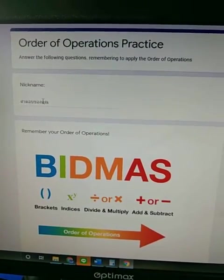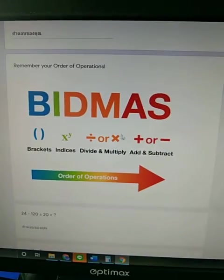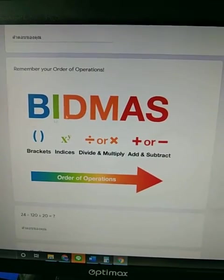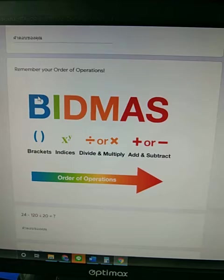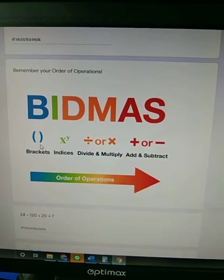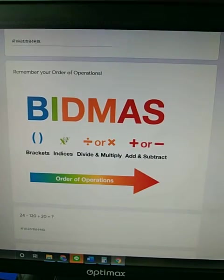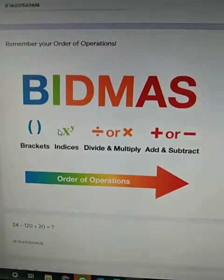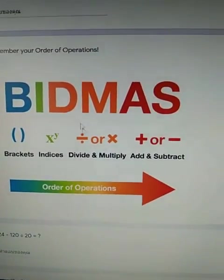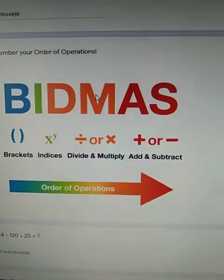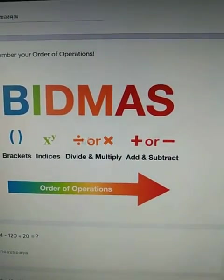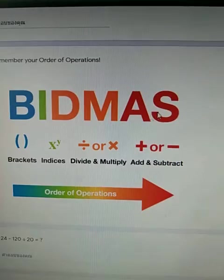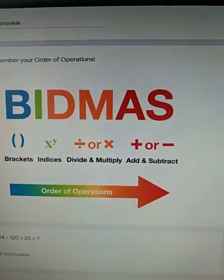So remember to put your nickname first thing and I've put this here just to remind you of your order of operations. So we do our brackets as the first thing, then we do indices. We don't have to worry about that just yet. That's not going to be in any questions today. Then we divide or we multiply and if we've finished all our multiplication and division then we can add and subtract last.